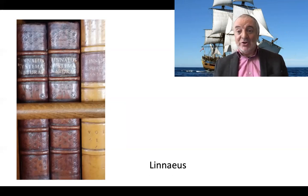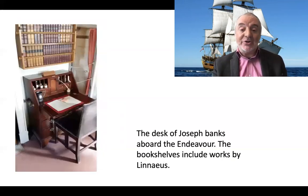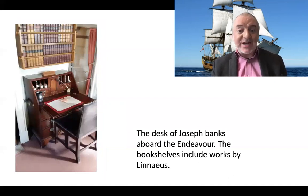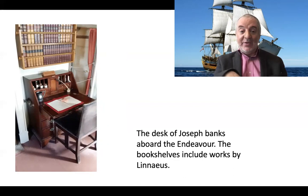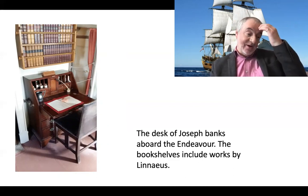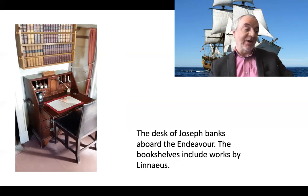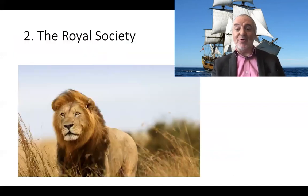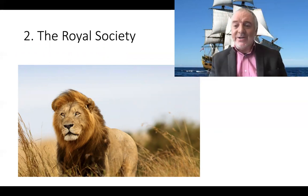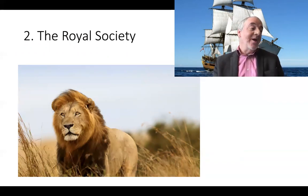When you have a new social trend, there are usually new institutions to go along with it. I've already mentioned the Royal Society, but first, this picture of Joseph Banks' desk aboard the Endeavour — he didn't have a big office; in fact the space also served as the main dining room. You can see the bookshelves, which would include Linnaeus and other works in natural history.